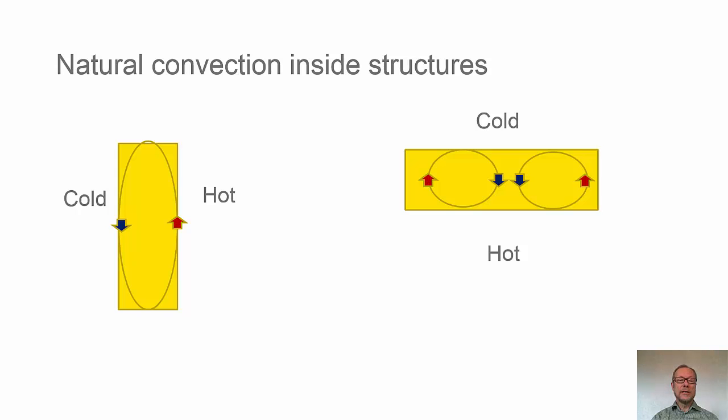There might be a circulation and a natural convection of heat transfer, of heat flow. On the right hand side, we see a similar thing with horizontal. This could be the attic floor insulation.